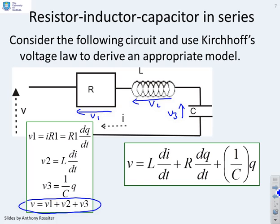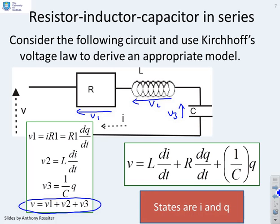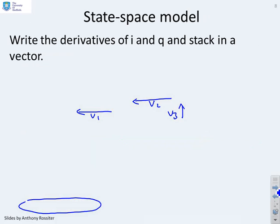And what we want to do now is say, can I put this into state space form? The obvious choices of the states are going to be i and q. So what we need to do is write the derivatives of i and the derivative of q and stack these in a vector. That's how we form the state space model. We find the derivatives and stack the derivatives in a vector.